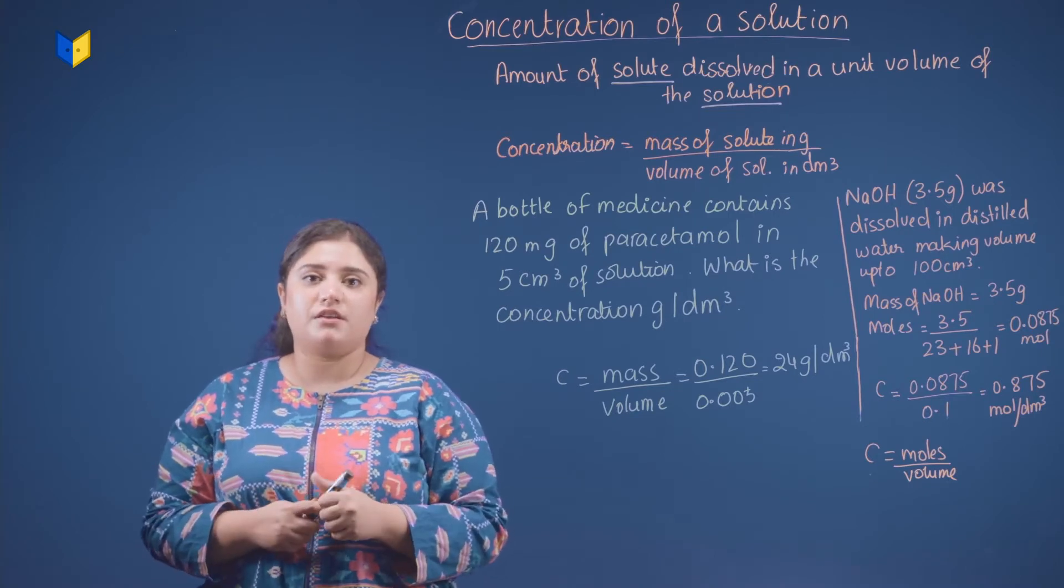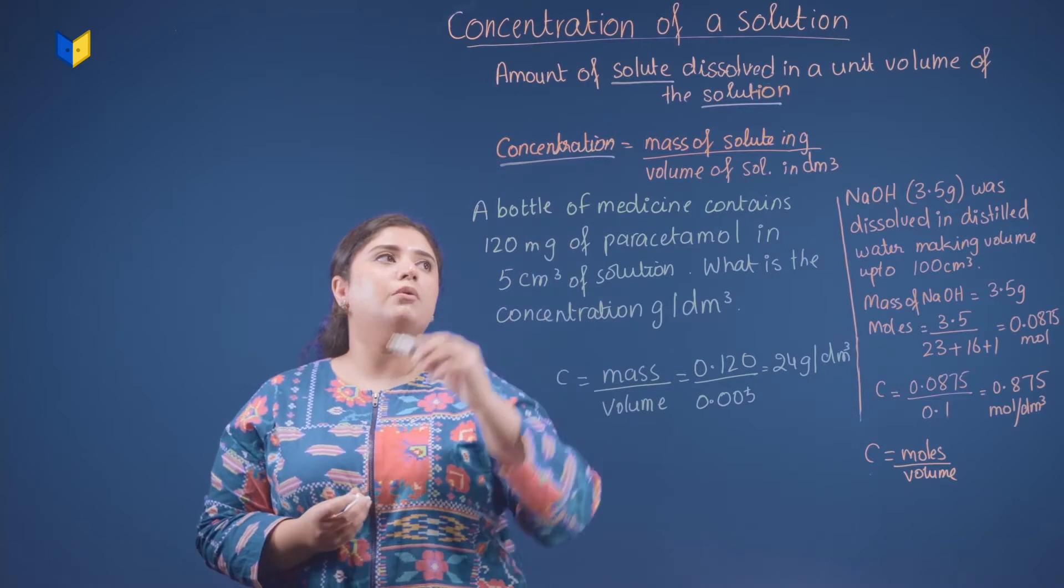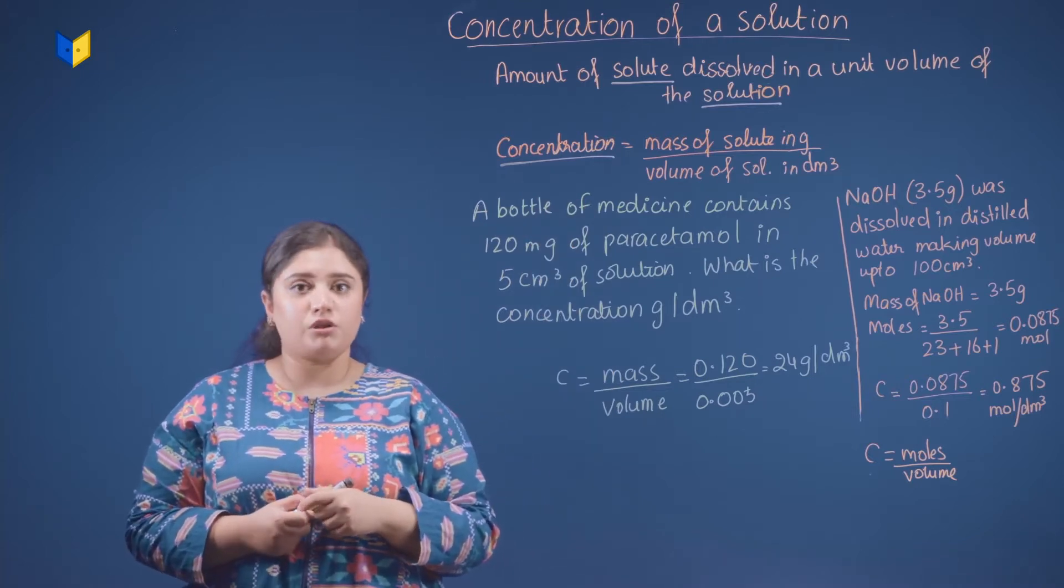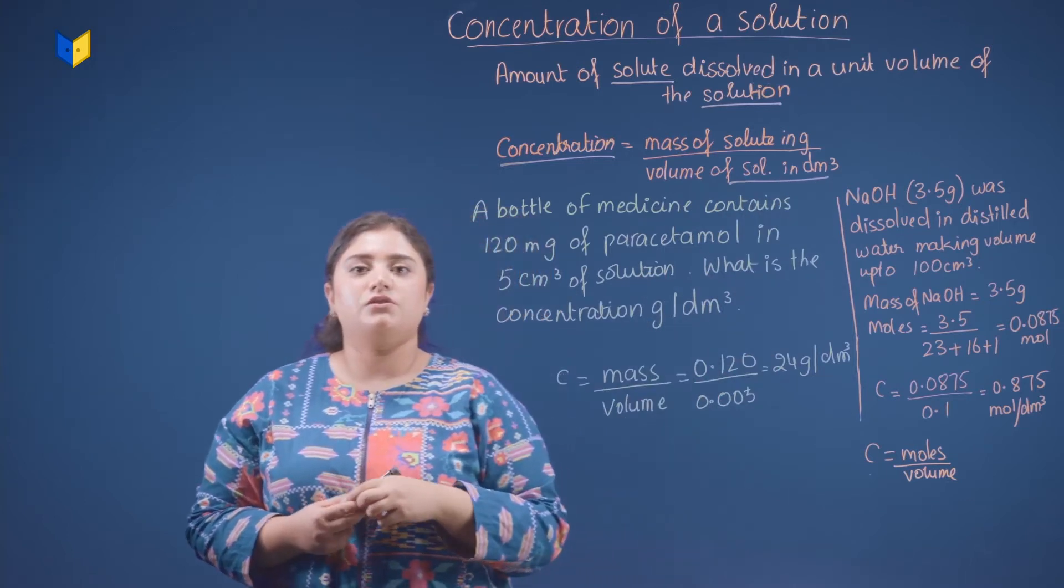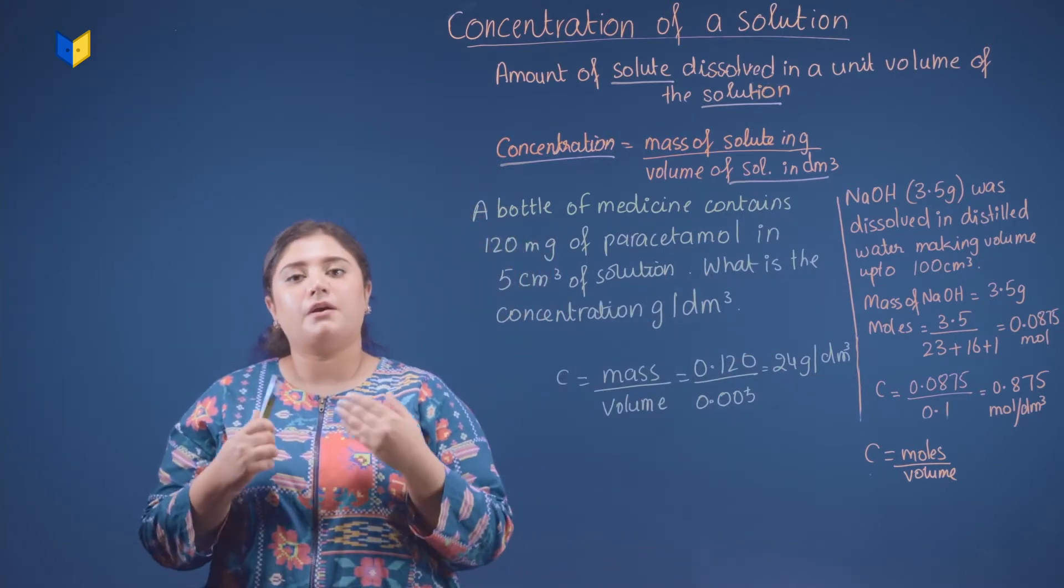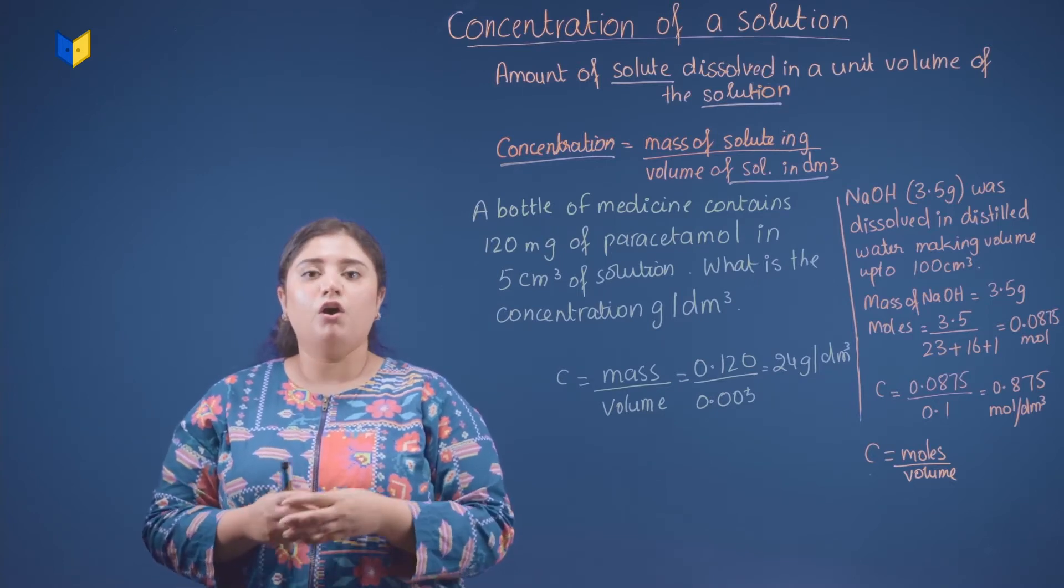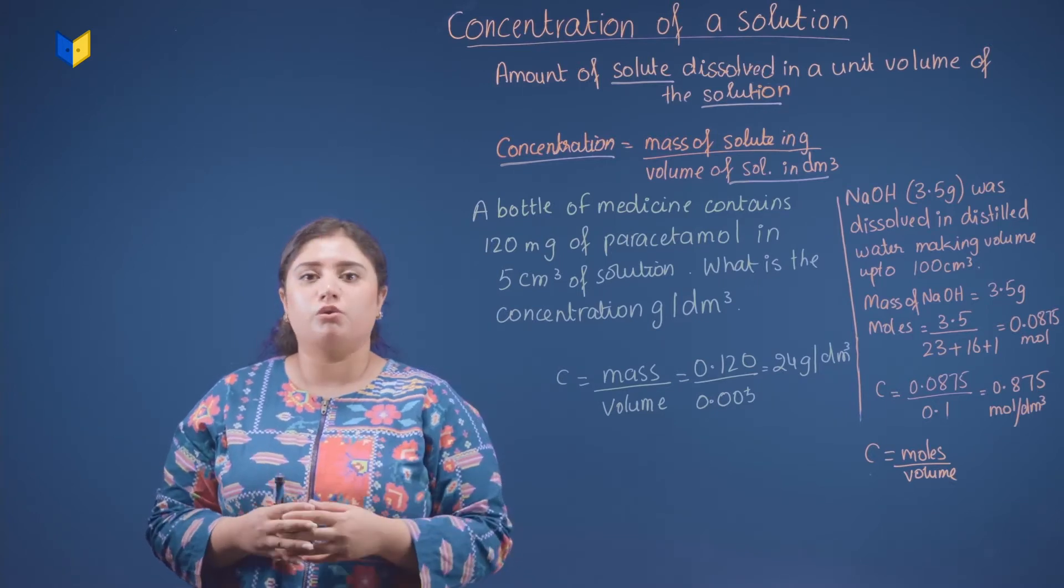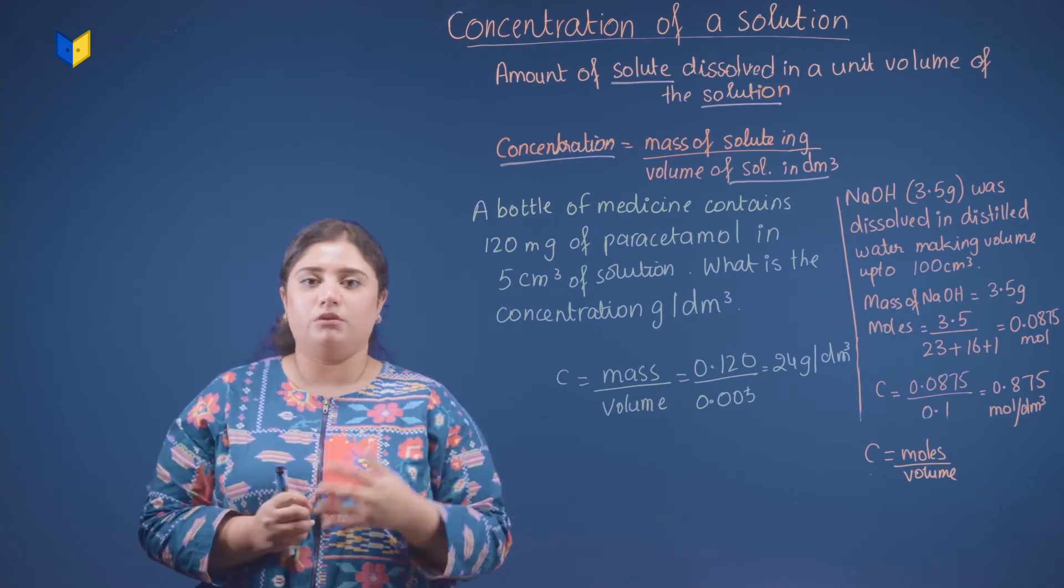Now the next thing is concentration equals mass of solute in grams divided by volume of solution in dm cube. As I just told you, the mass of the solute will be in grams and the volume of solution will be in dm cube.